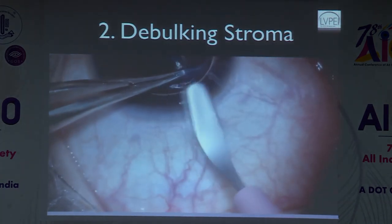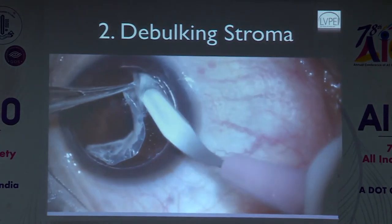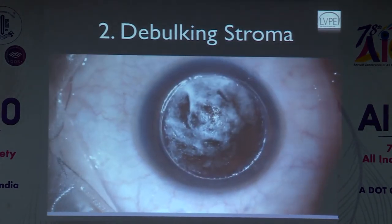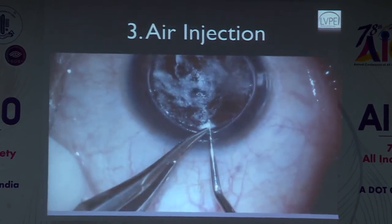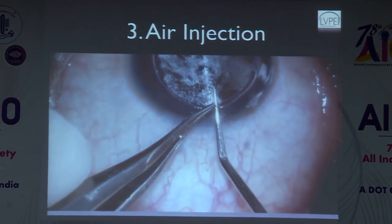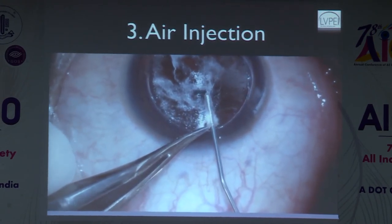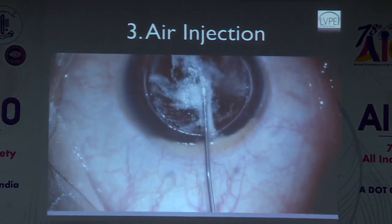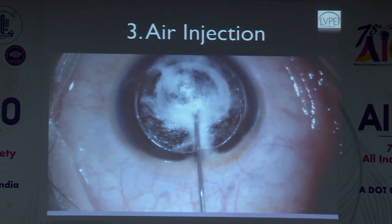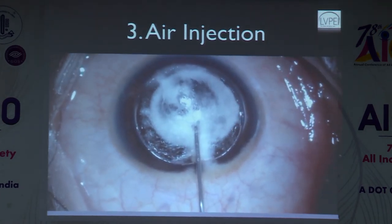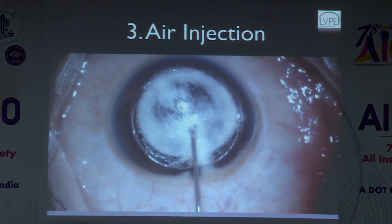Inject the air bubble: use a blunt or pointed dissector to make a channel within the stroma, then inject air using a viscoelastic cannula and 2cc syringe. In an ideal case, the bubble develops centrally and slowly expands to the periphery, reaching about 8 to 8.5 mm. Don't try to enlarge beyond that as it may pop. In cases where the cornea is thin centrally, skip debulking and inject directly — a bubble will form, though the level may vary.